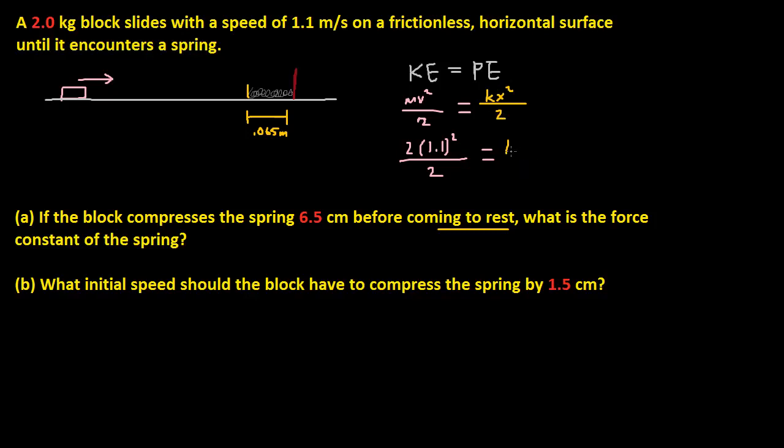So the distance compressed is k, 0.065 meters. So that's squared over 2.